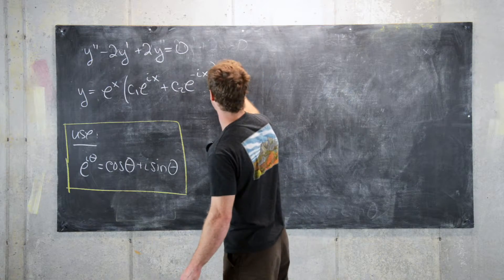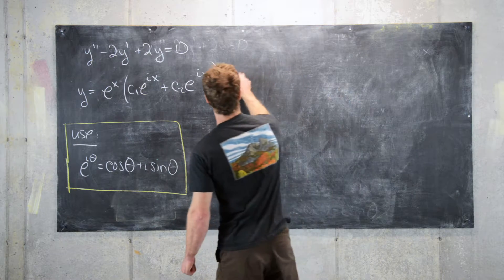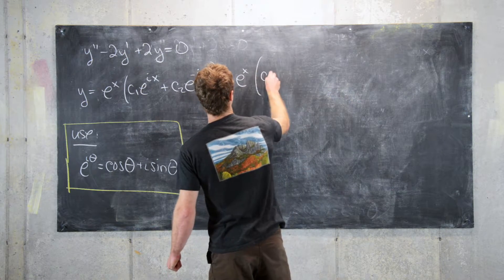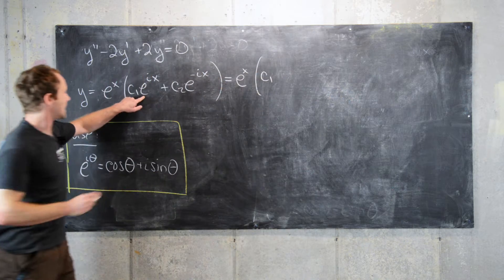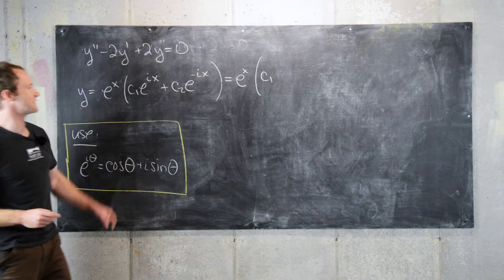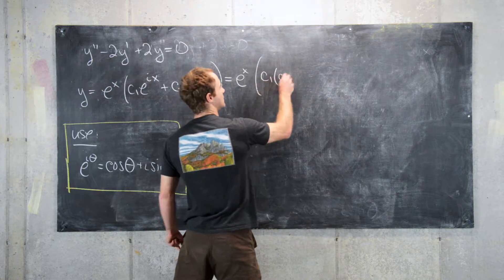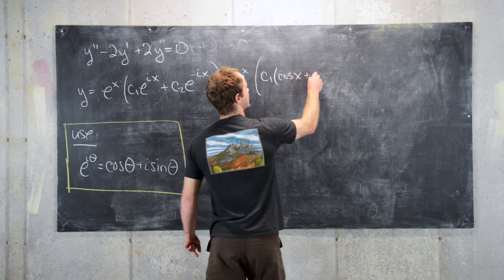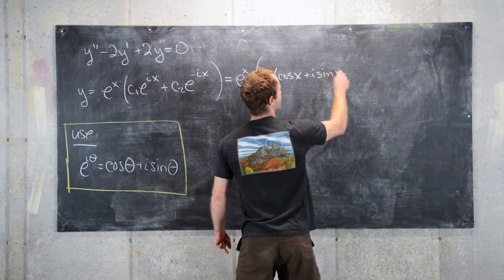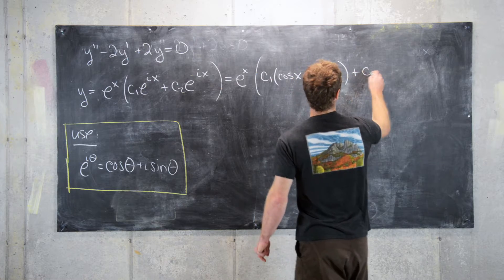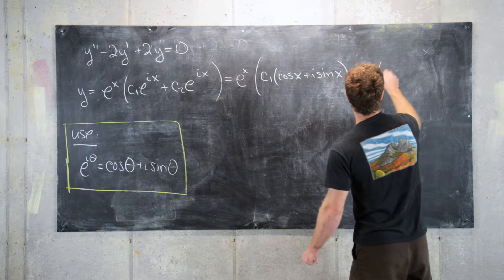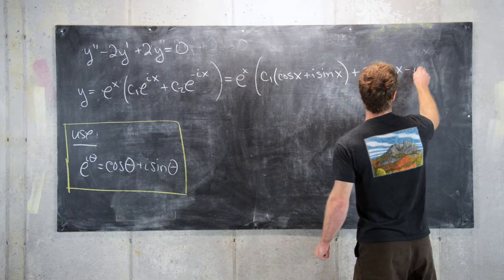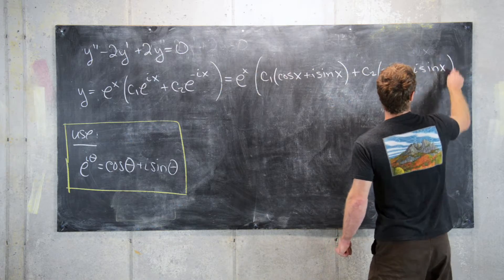So let's see what that will give us. So here we'll have e to the x and then we have c1 times, now set x equal to theta. So we'll have cosine x plus i sine x plus c2 and then we'll have cosine x minus i sine x.